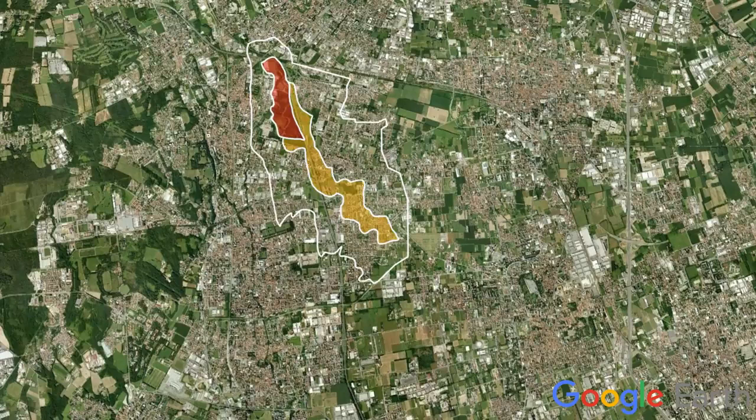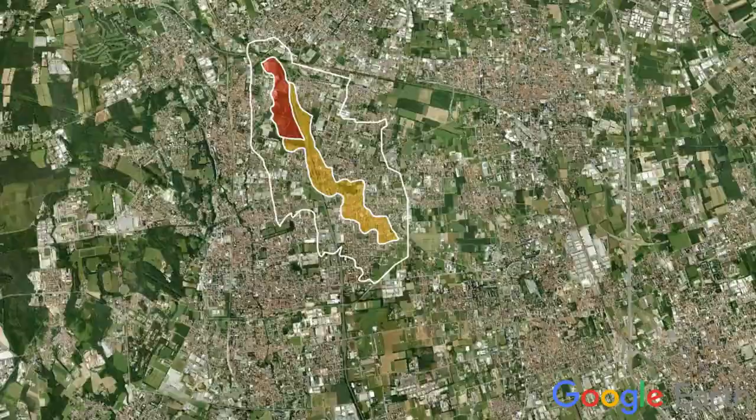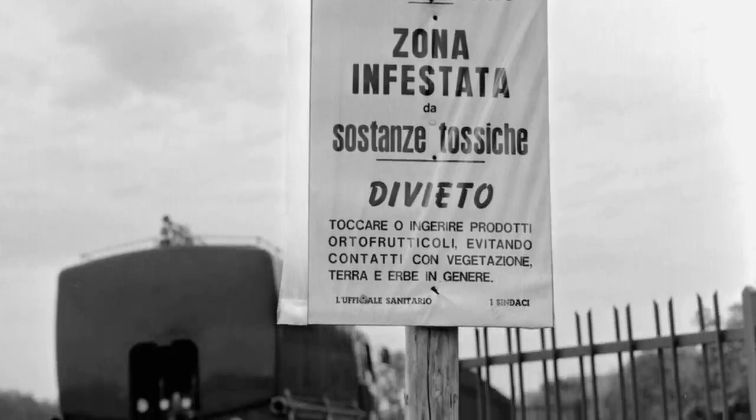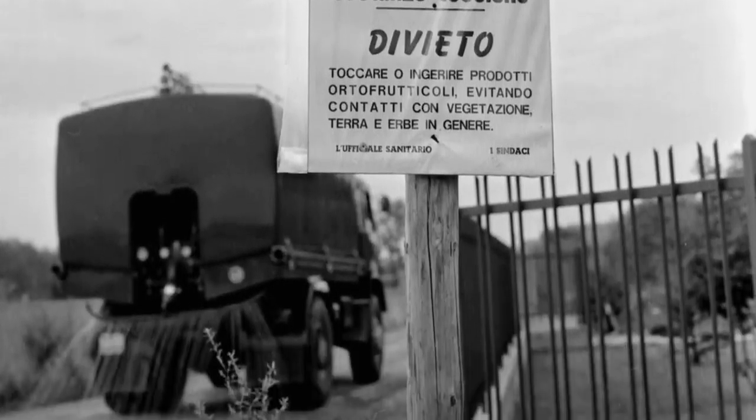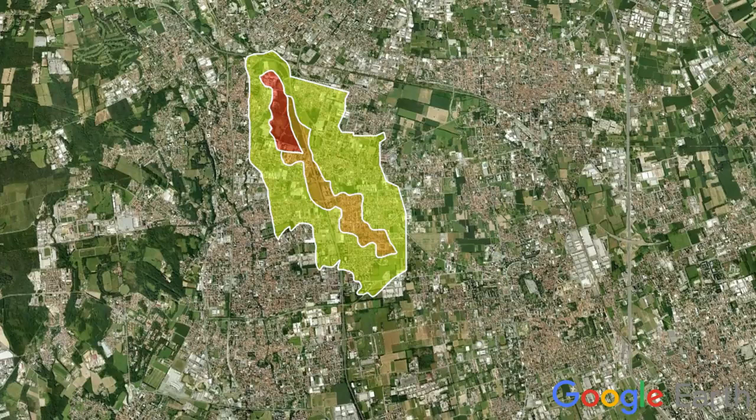Zone B covered 270 hectares, including Cesano, Moderno, and Desio, and had dioxin concentrations between 5 and 50 micrograms per meter squared. In August, all pregnant women and children under 12 had to leave the area during the daytime to reduce exposure. All agricultural activities were also prohibited. Zone R, or compliance or caution zone, consisted of 1400 hectares where dioxin was detected in trace quantities and farming was restricted.